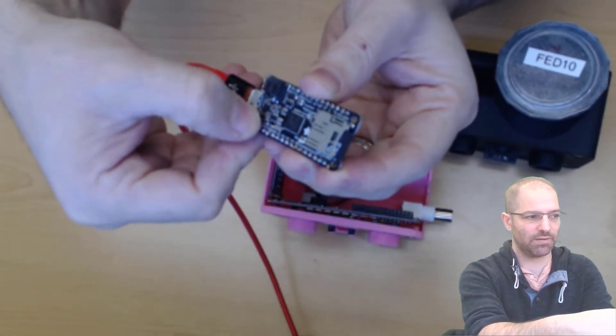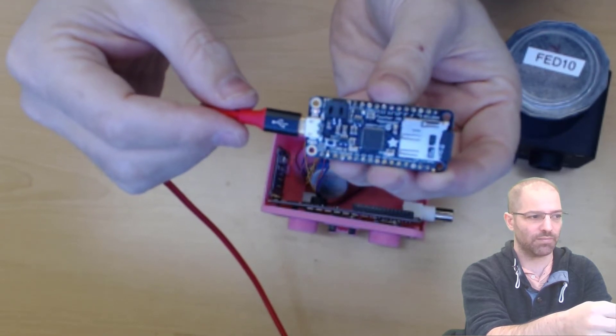And then I can double click it. I should put it into that breathing mode. Hopefully you can see that there. And now we can test if we're able to flash anything.